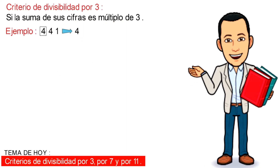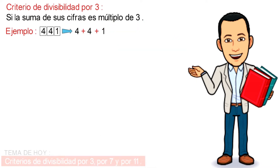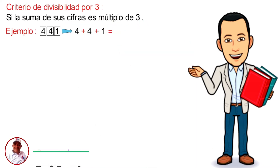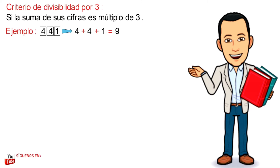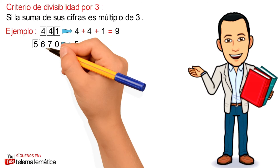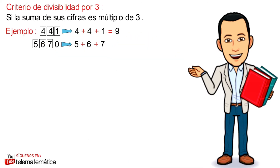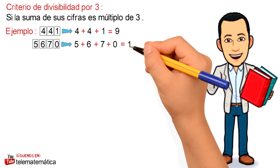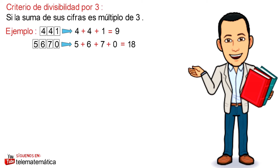Tenemos el número 441, donde la suma de 4 más 4 más 1 va a ser igual a 9. Y este valor es múltiplo de 3, ya que 3 por 3 es igual a 9. Tenemos el número 5670, donde la suma de 5 más 6 más 7 más 0 va a ser igual a 18. Y 18 también es múltiplo de 3, ya que 3 por 6 es igual a 18.